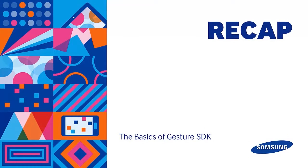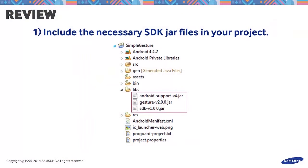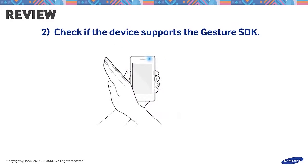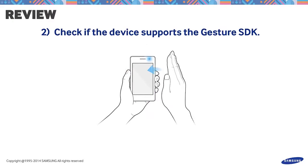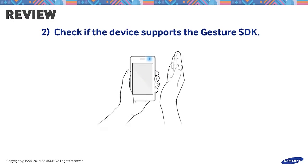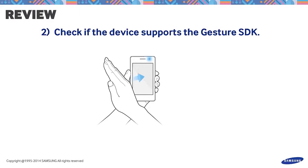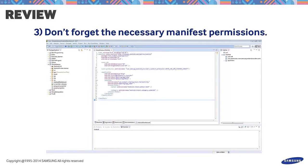Let's summarize the things we've discussed in creating the basic application that uses gesture: Always include the necessary SDK jar files in your project. Check if the device supports the Gesture SDK. Validate if the device has a motion sensor and check the OS — it must have Jelly Bean API 18 or higher. Implement this through code by calling SSDKUnsupportedException or isFeatureEnabled. Don't forget to include the necessary manifest permissions. We hope this tutorial helped. For inquiries, post your questions on the official forum at developer.samsung.com. Thanks for watching!